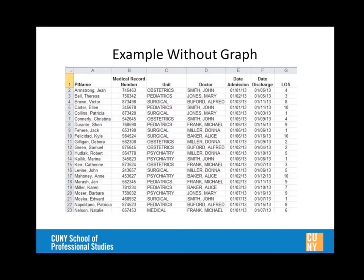Mike shows some sample fictitious patient data with fields including patient name, medical record number, unit, admission date, discharge date, and length of stay computed in column G. The data has consistent doctor names listed, no blank columns, no blank rows — the data is nice and tight. The data extends beyond row 23, showing the first 22 patients plus the header.